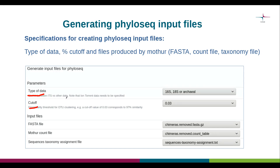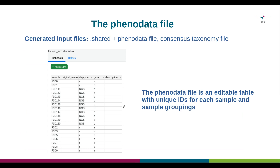The cutoff value corresponds to the percent dissimilarity threshold used for OTU clustering. For example, a cutoff value of 0.03 stands for 3% dissimilarity or 97% similarity, which is often used as a threshold for OTU clustering. We also have to specify three input files: a FASTA file with sequences following chimera removal, a count table file, and a sequence taxonomy assignment file. Running the generate input files for PhyloSeq tool produces a number of files: a shared file associated with a phenotype data file, and a consensus taxonomy file.